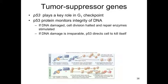P53 is a well-known tumor suppressor gene that plays a likely role in the G1 checkpoint. The P53 protein monitors the integrity of DNA, constantly checking whether it's good or not. If the DNA is damaged, the P53 enzyme halts the cell cycle so that repair enzymes can be stimulated to fix the damage. If the DNA damage is irreparable, then the P53 gene directs the cell to kill itself — apoptosis — so it cannot pass on damaged DNA to its daughter cells.